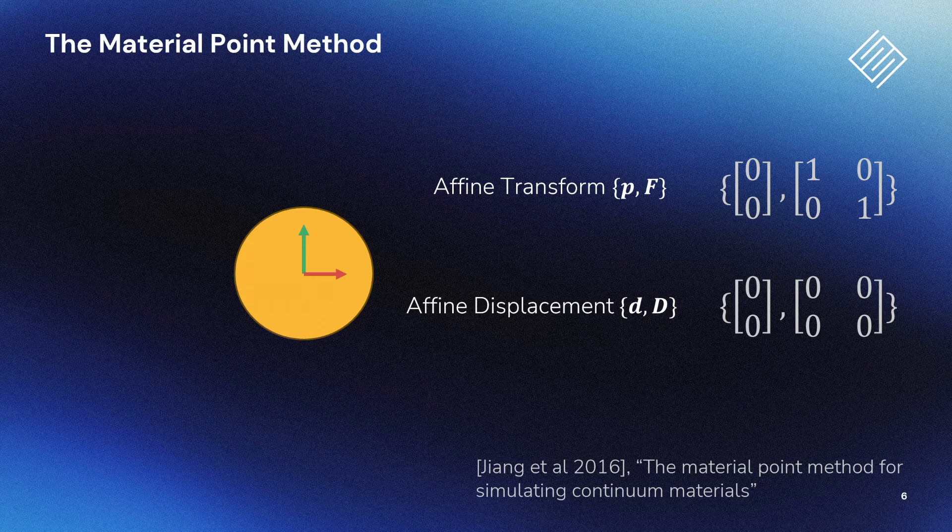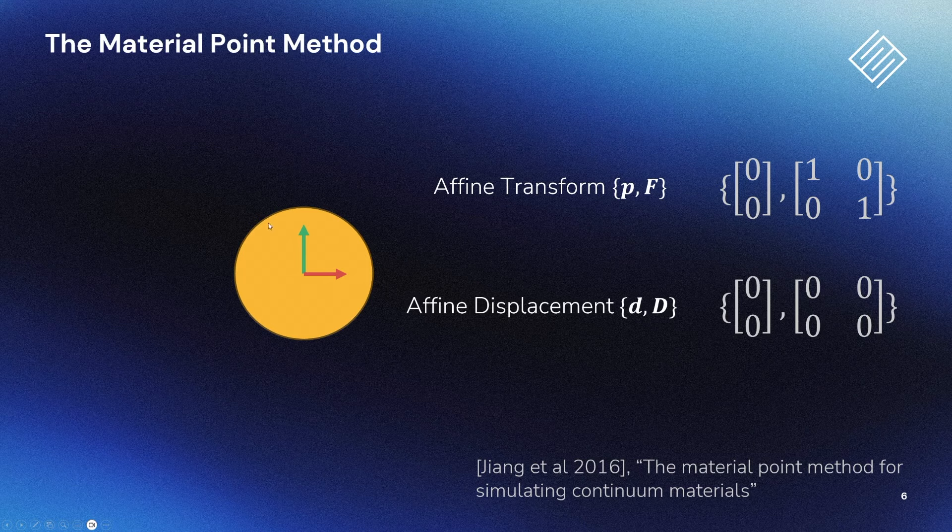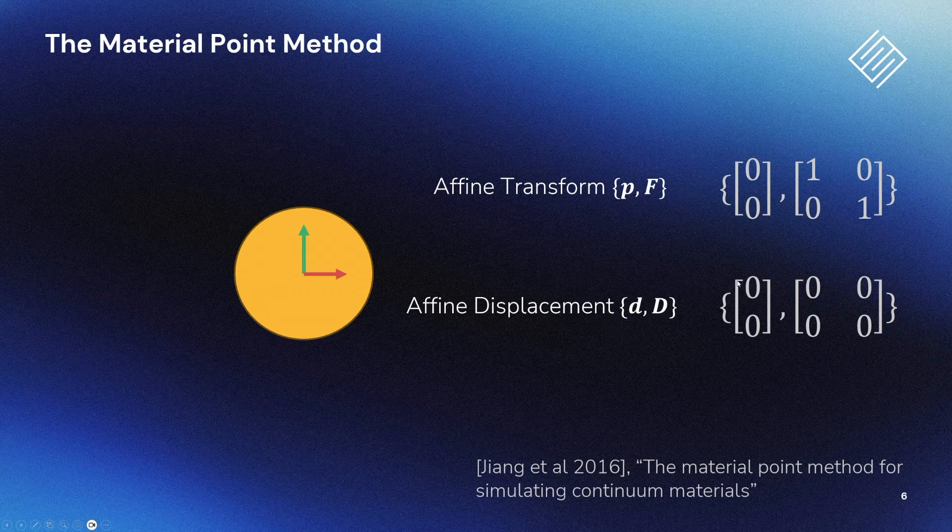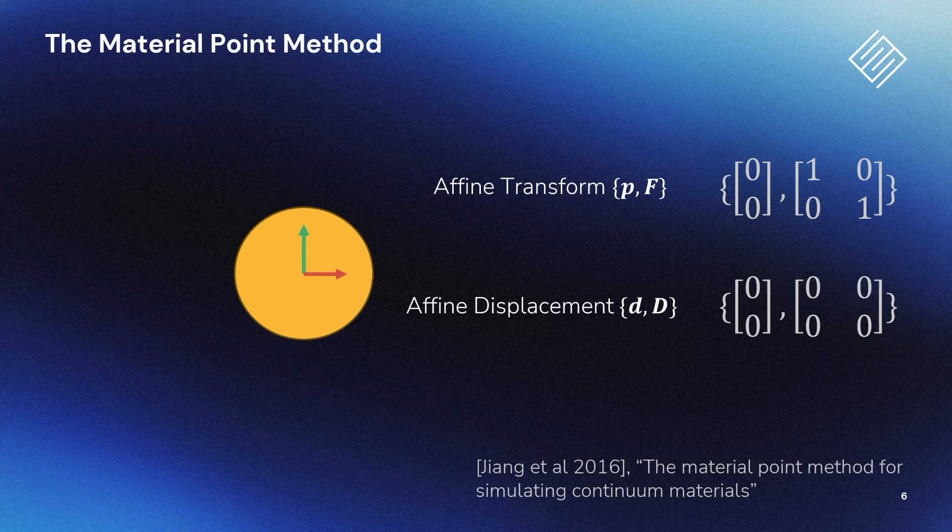Basically, in MPM, we discretize objects into particles that are like little blobs of matter that are equipped with an affine transform p and F. The F here is an arbitrary n-by-n matrix, where n is the number of dimensions, that's similar to the rotation matrix of a rigid body, but can also contain scale and shear.